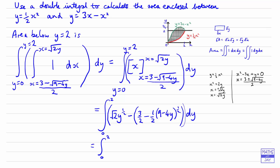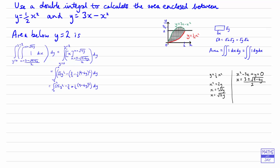Multiplying out, we get root 2 times y to the half, minus 3 over 2, plus a half times 9 minus 4y to the power of a half, dy. Now we're down to a single integral, so let's shrink things down to give ourselves space and proceed with integrating this.